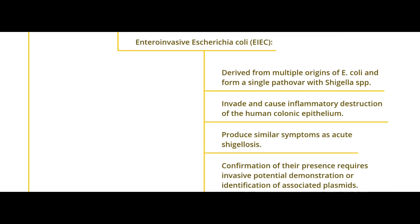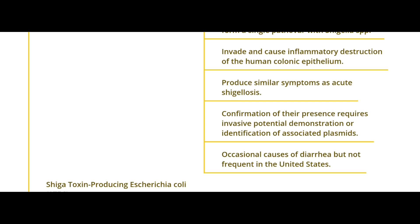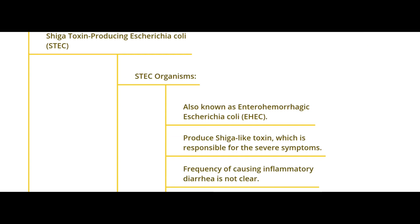EIEC, or enteroinvasive E. coli, is derived from multiple origins of E. coli that share a single pathogenic pathway with Shigella species. Some evolutionary scientists think E. coli acquired these genes from Shigella. They have the same mechanism — invading and causing inflammatory destruction of the human colonic epithelium, producing similar symptoms. Confirmation requires invasive demonstration or identification of an associated plasmid, so it usually takes time to diagnose by culture. It is an occasional cause of diarrhea in many countries but usually not in the developed world.